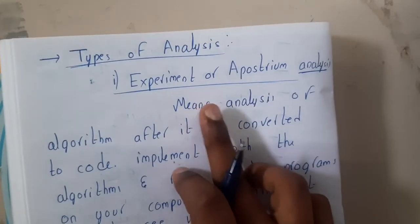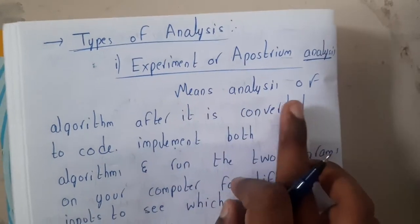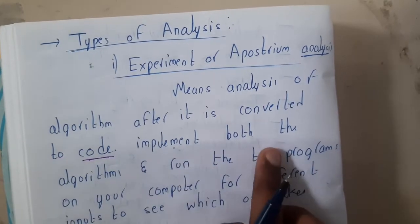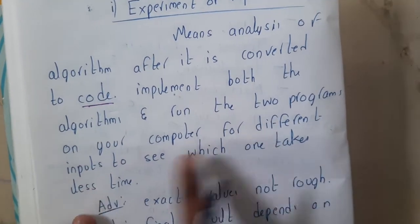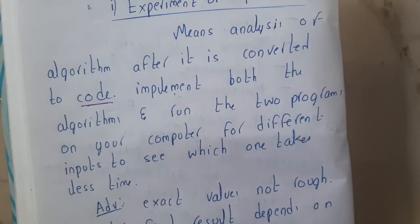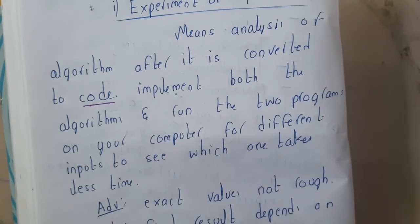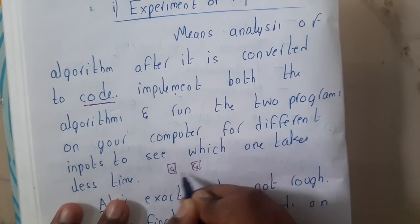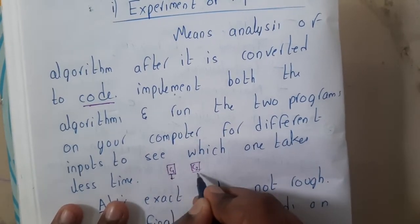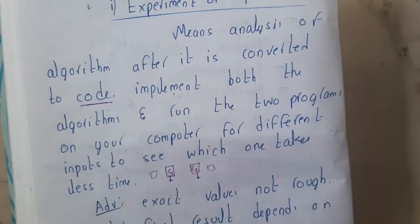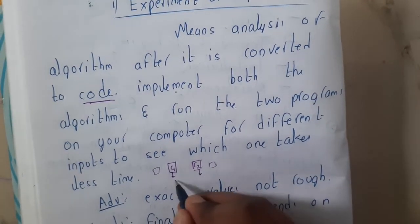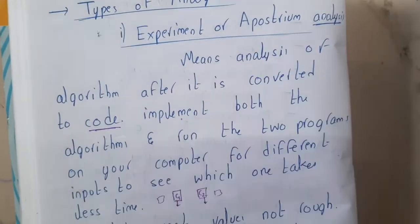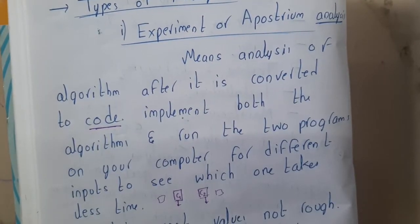Experimental or a posteriori analysis means analysis of algorithms after it is converted into code. You implement both algorithms and run the two programs on your computer for different inputs to see which one takes less time. Assume you have code C1 and your friend's code C2. On the same system with the same inputs, you run both - whichever performs faster is best. That is nothing but experimental or a posteriori analysis.